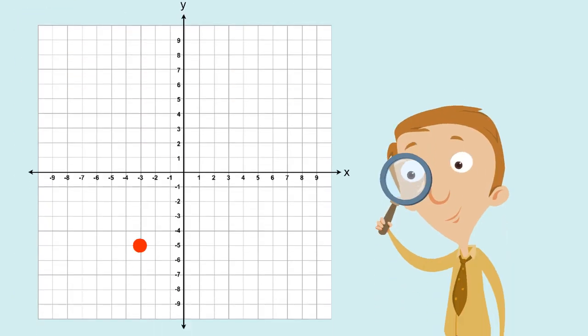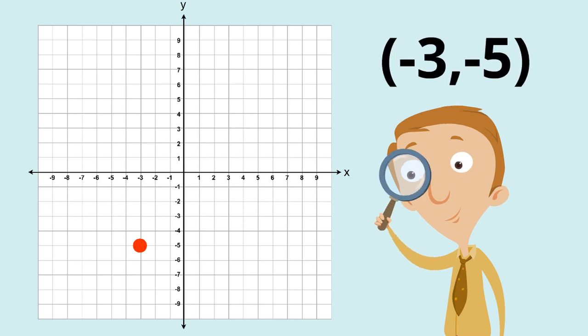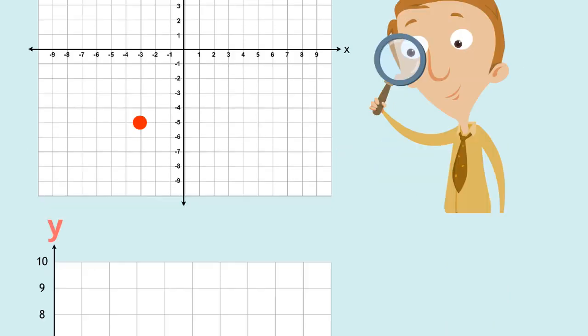So for example, this point here that I've marked, the coordinates for it would be (-3, -5). But like I said you don't need to worry about them too much at the moment, they're more important in secondary school. So let's go back to our first quadrant grid.